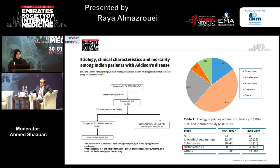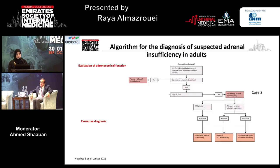Histoplasmosis is becoming a very common cause of primary adrenal insufficiency in the north of India. In this single-center study, they found that over the last few years, histoplasmosis was the leading cause of primary adrenal insufficiency compared to TB and autoimmune disease.